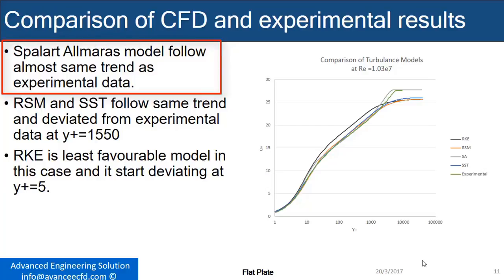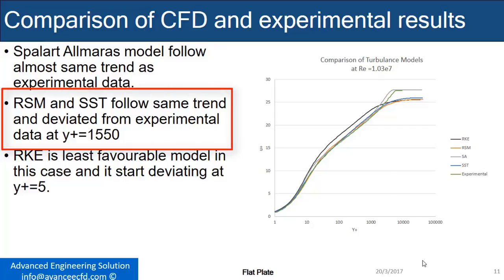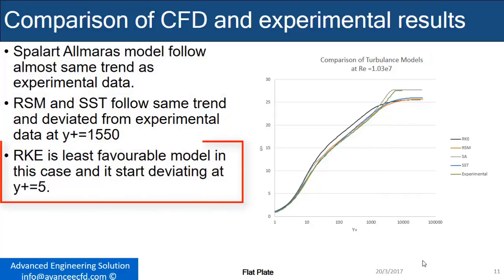The Spalart-Allmaras model follows almost the same trend as experimental data. RSM and SST follow the same trend and deviate from experimental data at Y+=1550. RKE is the least favorable model in this case and starts deviating at Y+=5.